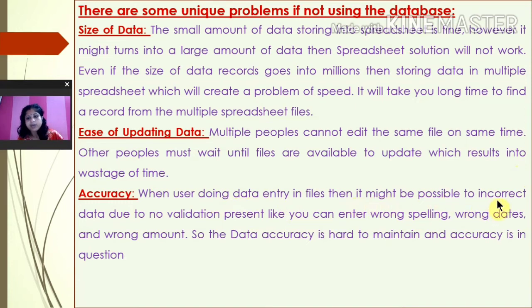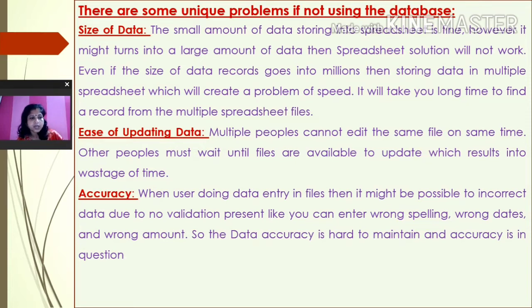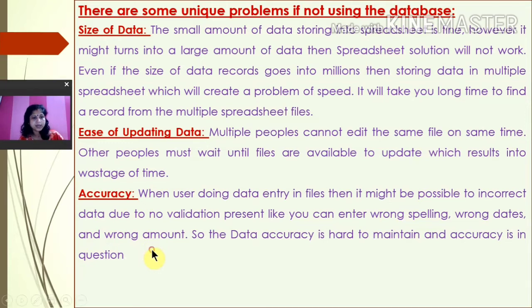Another issue is accuracy. When users do data entry in files, incorrect data may be entered — wrong spellings, wrong dates, wrong amounts — because there is no validation in place. Validation means a restriction or rule on how data can be entered. For example, marks cannot be greater than 100. If more than 100 is entered, it should show an error message. Similarly, a product price cannot exceed a set limit. These types of restrictions cannot be enforced in spreadsheets, so we use a database to keep data accurate.